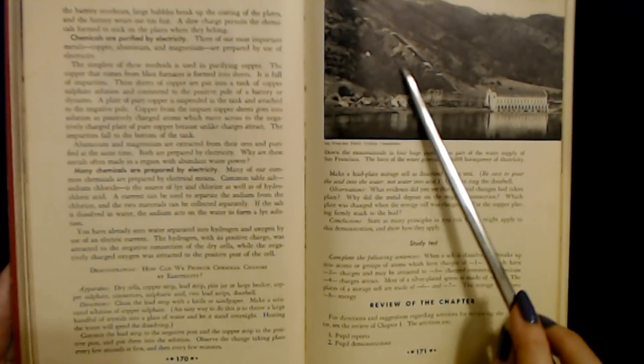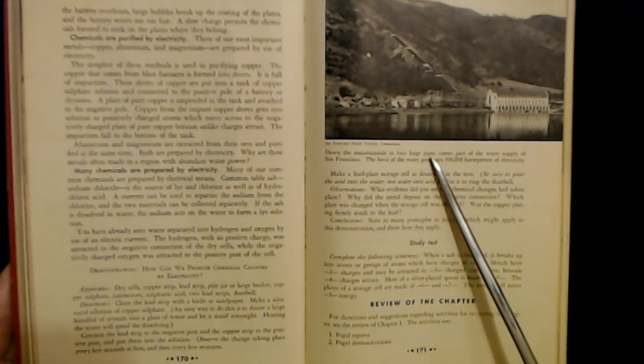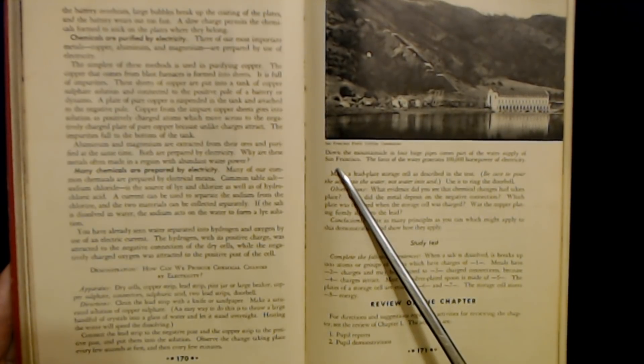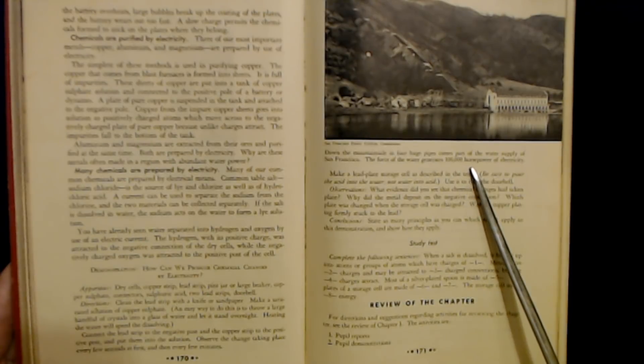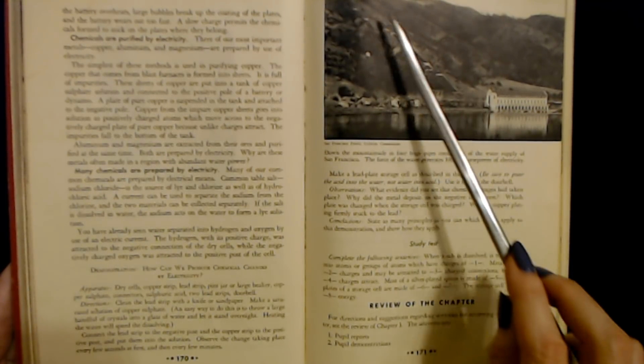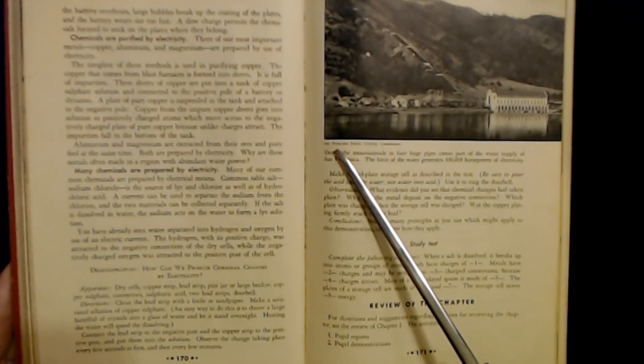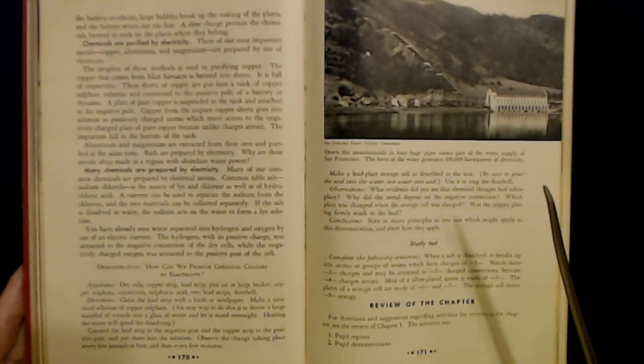And here we have a picture. Down the mountainside in four huge pipes comes part of the water supply of San Francisco. The force of the water generates 100,000 horsepower of electricity. Wow, that's cool. And this is a picture from the San Francisco Public Utilities Commission. That's pretty cool.